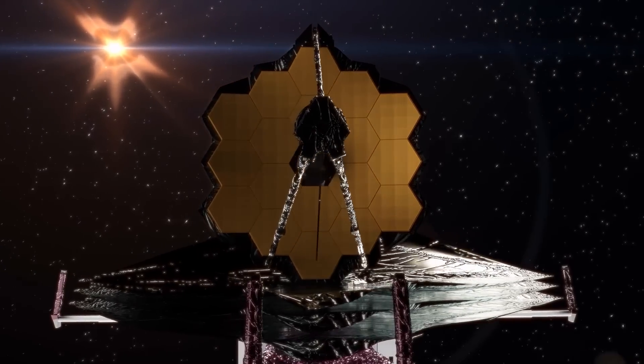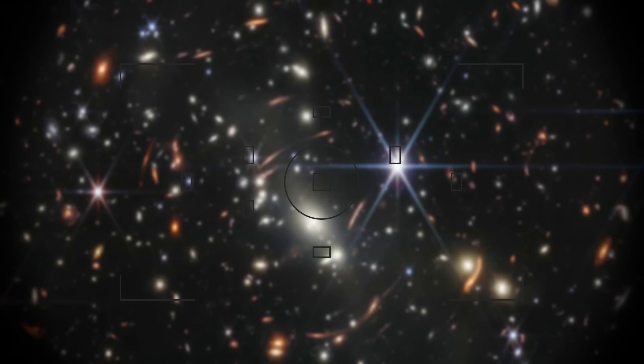How is that possible? Bill breaks it down into simple terms, and it all starts with the JWST's deep field image.